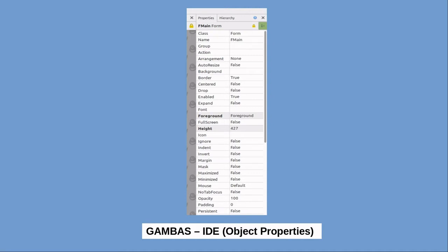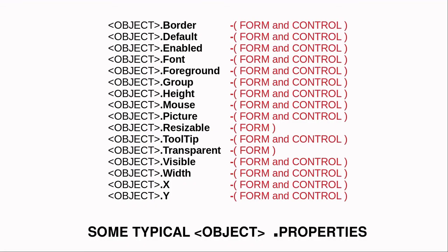These objects have programmable characteristics which are called properties. These properties can be set in the IDE at design time by the programmer. Object properties define such aspects as size, location, whether or not they are enabled or visible, and various other properties specific to the individual objects. Many objects, both controls and containers, share many of the same types of properties.